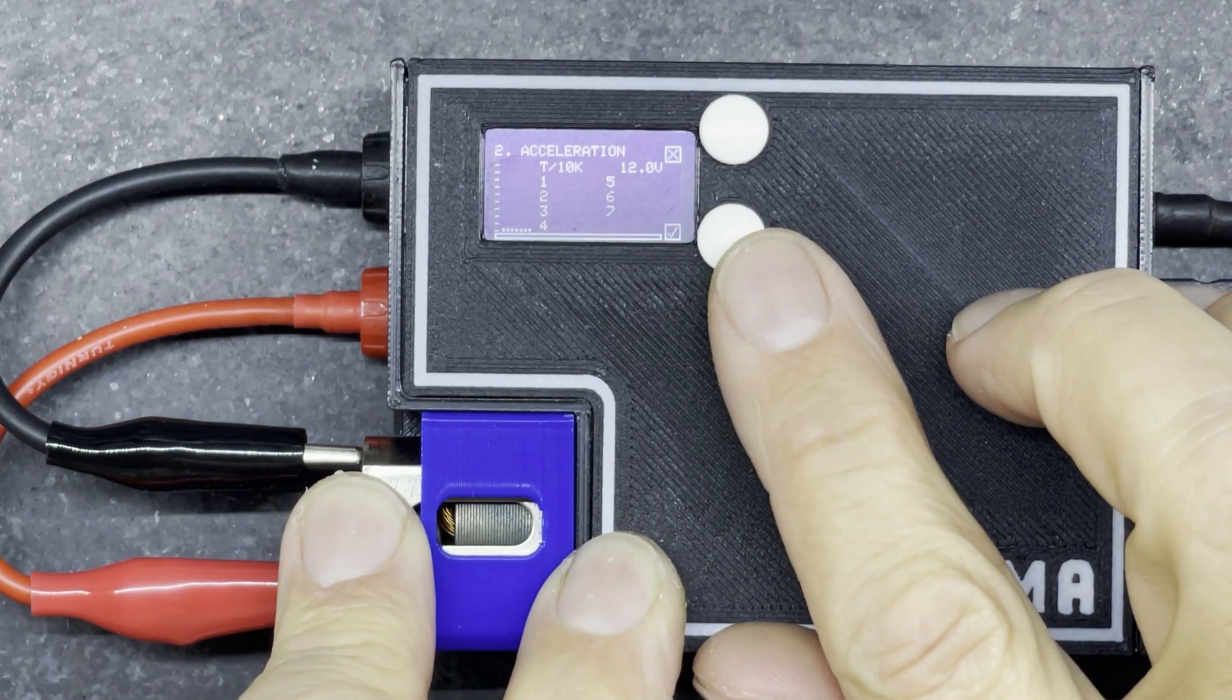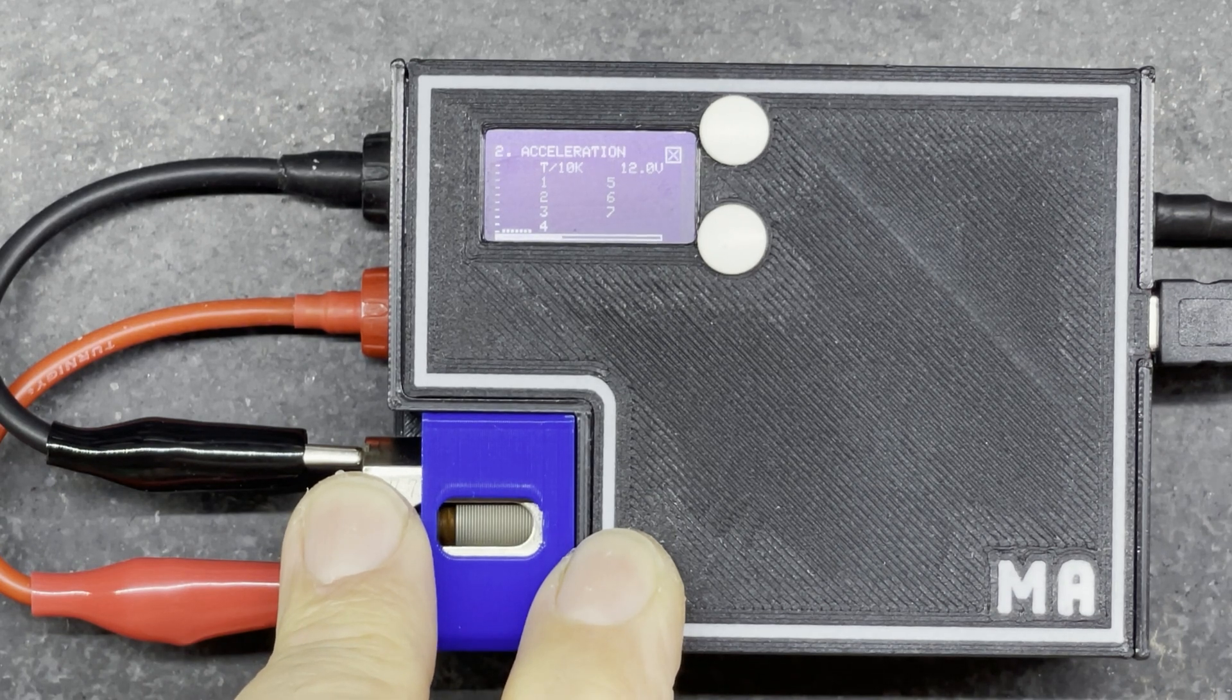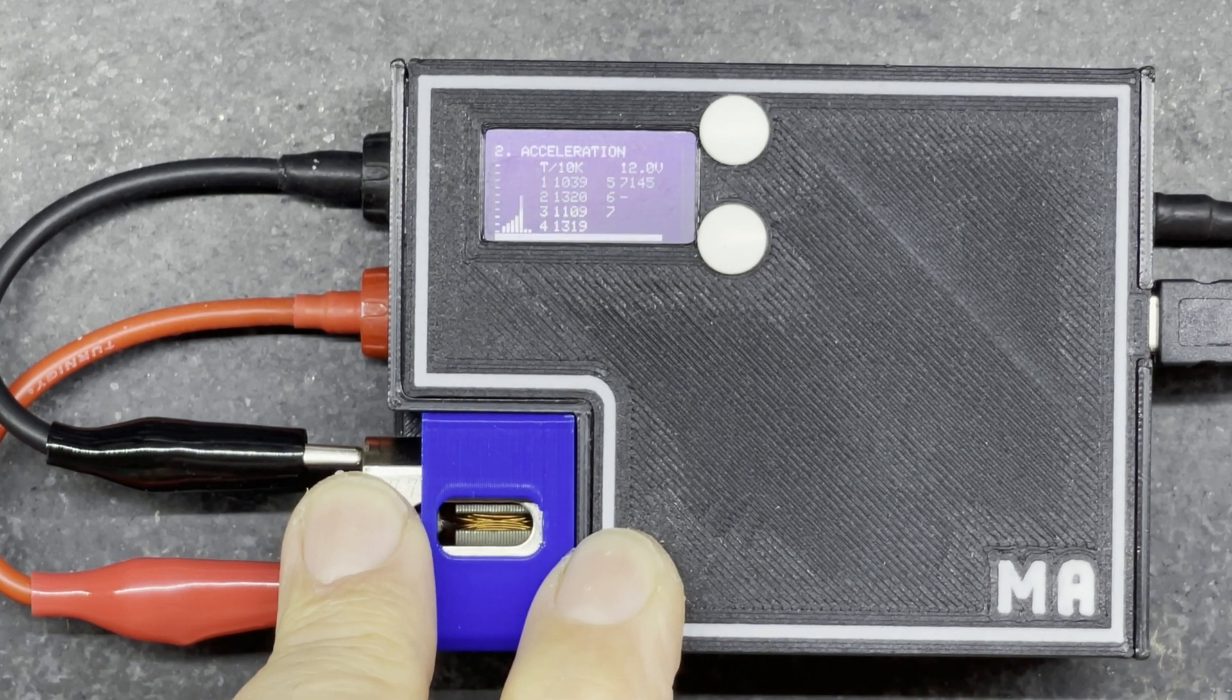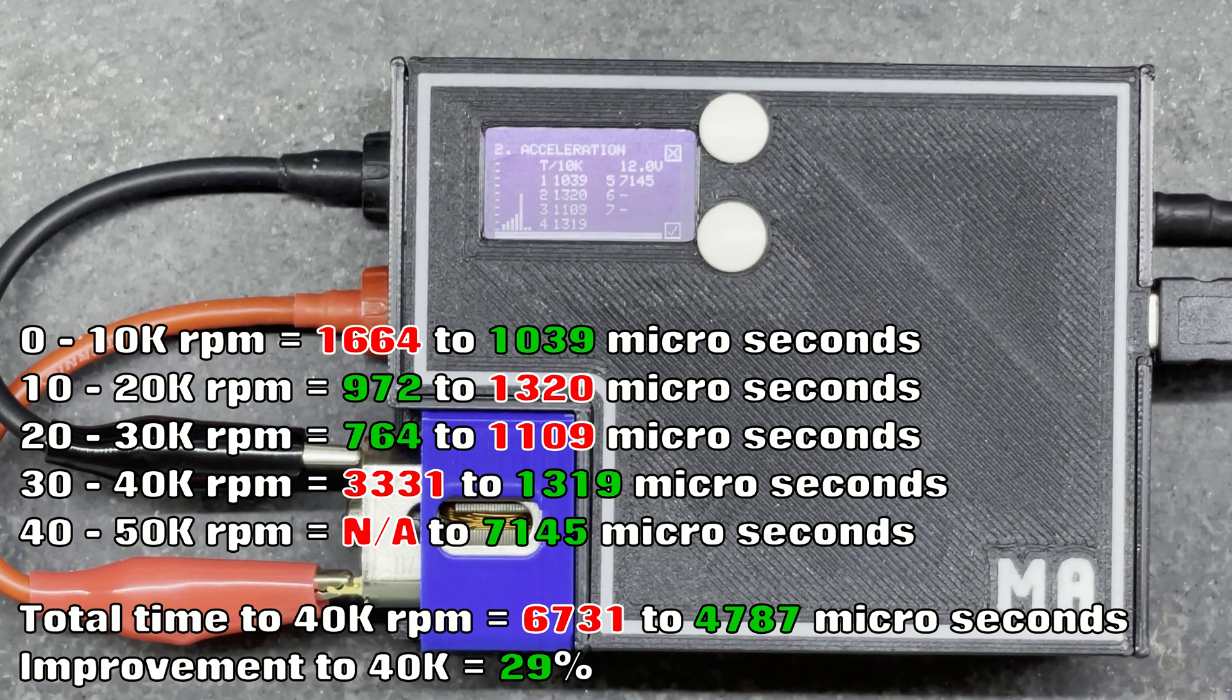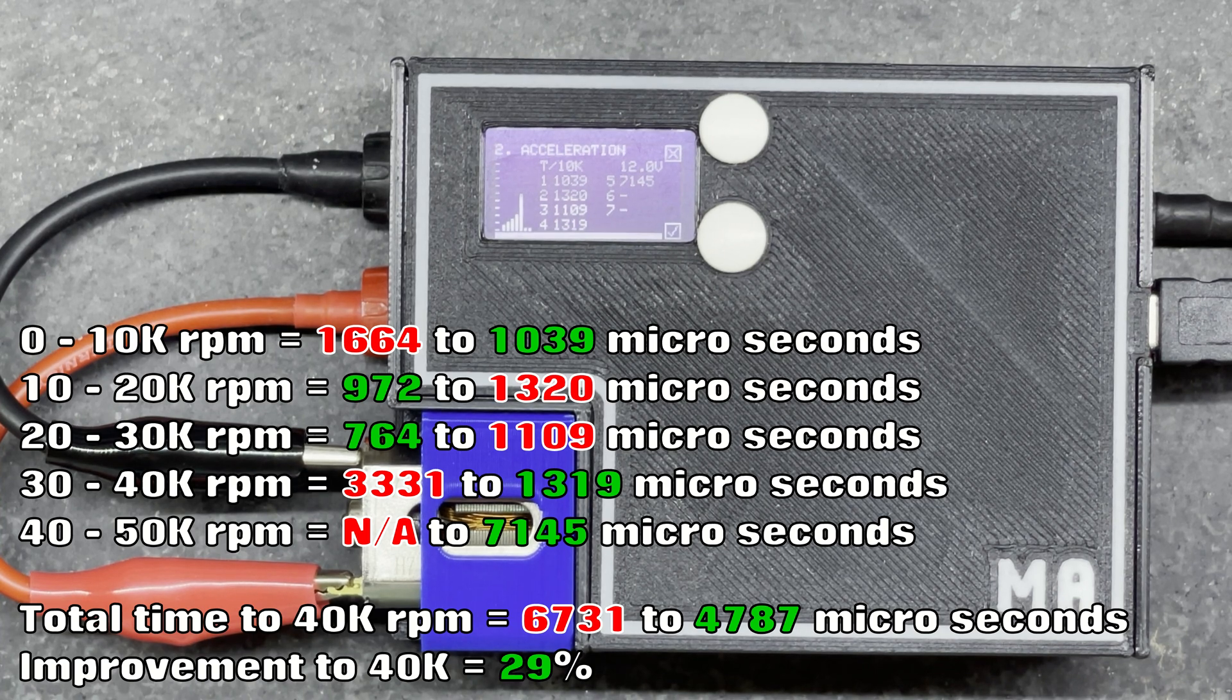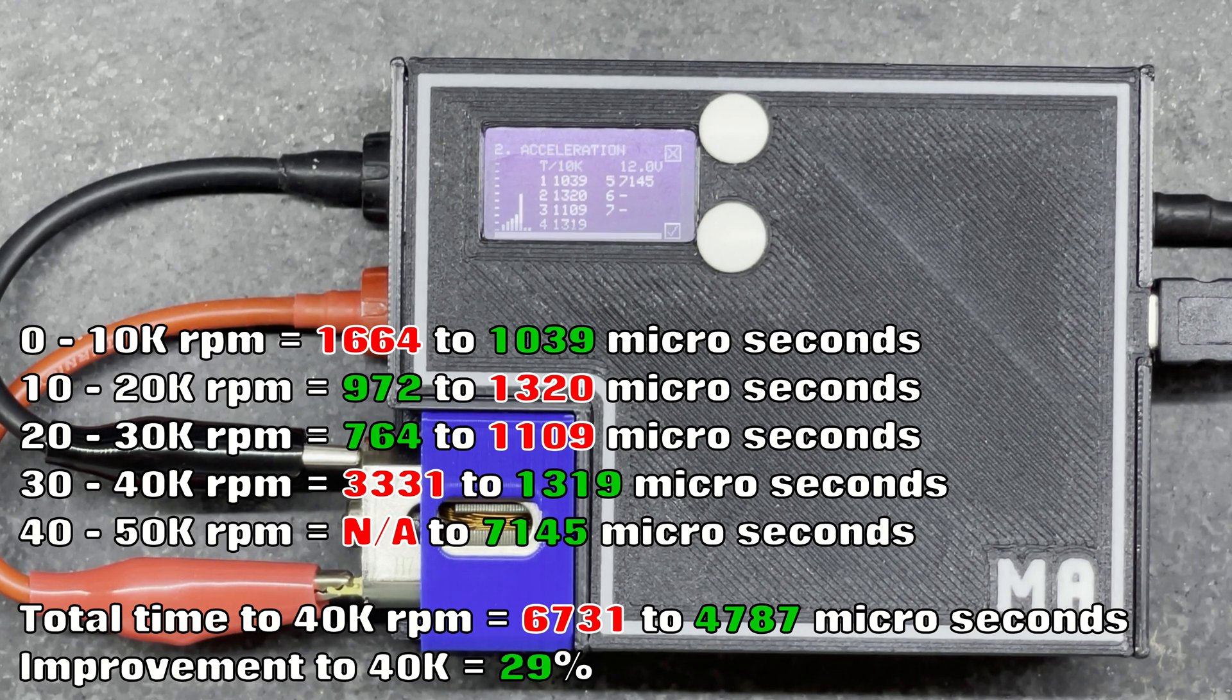Let's run our acceleration test. Well that's a big improvement. Before the motor didn't even get up to 50,000 RPM. Now it does really quickly. When we compare the results from before, around about the 20-30,000 RPM it's slightly slower than it was before, but 40,000 RPM is much faster and again it gets up to 50,000 RPM. So quite a bit of an improvement there.